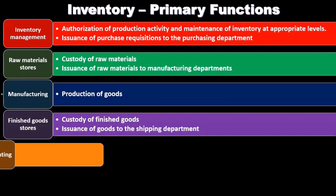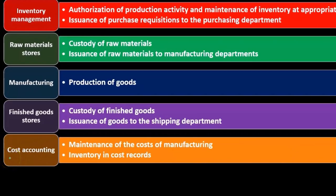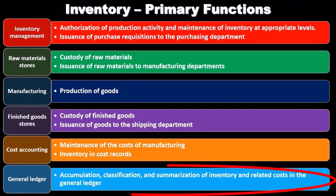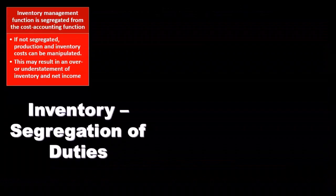Then we have cost accounting, which is responsible for the maintenance of the cost of manufacturing inventory and cost records. Finally, we have the general ledger, which handles the accumulation, classification, and summarization of inventory and related costs.